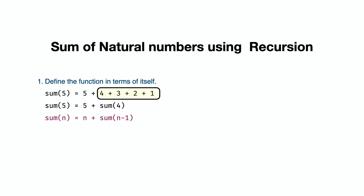It is 5 plus 4 plus 3 plus 2 plus 1. This means the sum of the first four natural numbers, and in general, sum(n) equals n plus sum(n-1). This is the recursive definition.